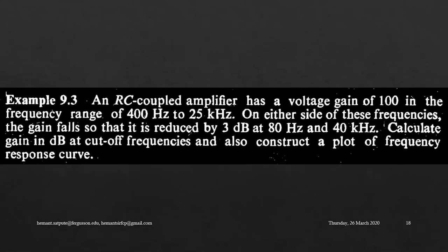Let's take an example. An RC-coupled amplifier has a voltage gain of 100 in the frequency range of 400 Hz to 25 kHz. On either side of these frequencies, the gain falls so that it is reduced by 3 dB at 80 Hz and 40 kHz.